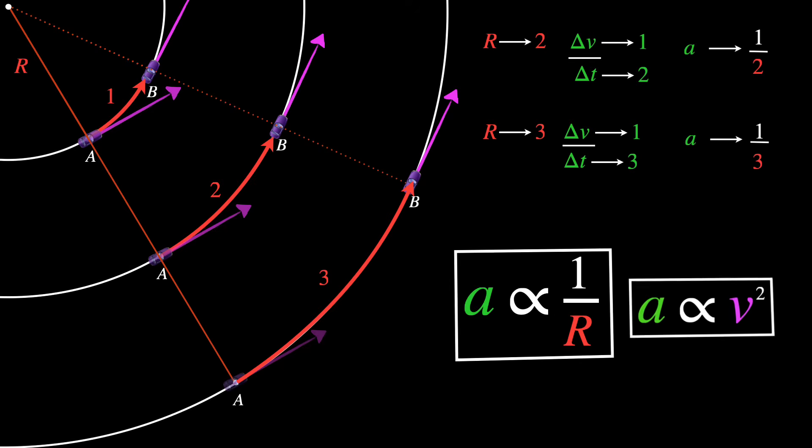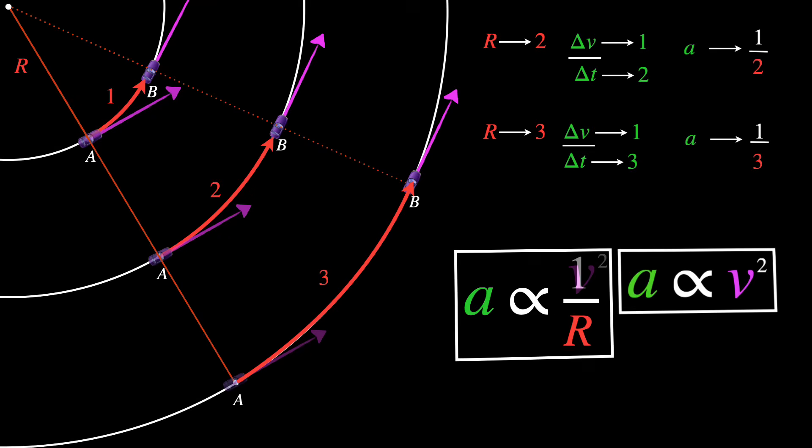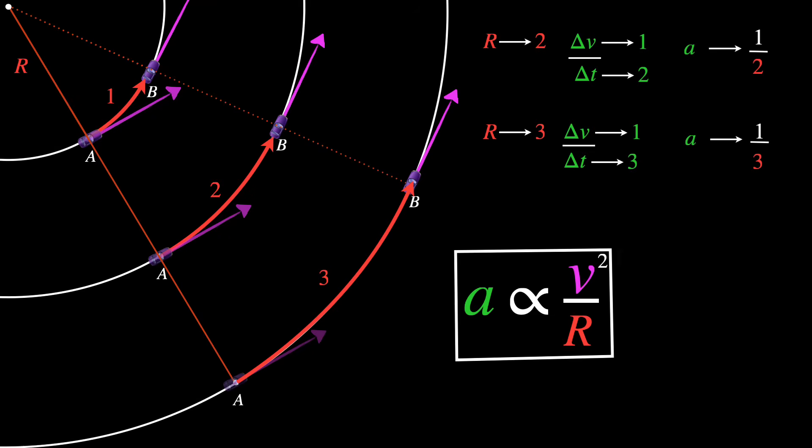There we go — an intuitive explanation for why centripetal acceleration has a v squared over r in it.